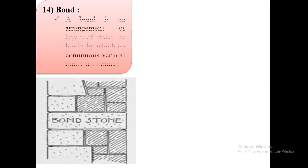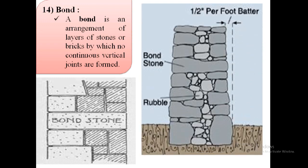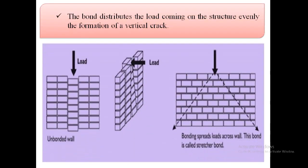The next term is bond. A bond is an arrangement of layers of stones or bricks by which no continuous vertical joints are formed. The bond distributes the load coming on the structure evenly and prevents the formation of vertical cracks. As shown in the image, an unbonded wall cannot distribute load properly, but in a bonded wall, load is distributed properly.